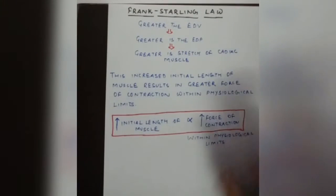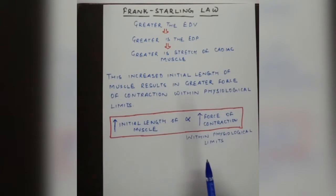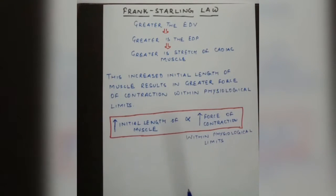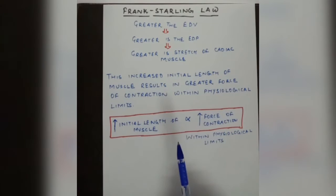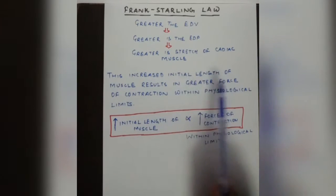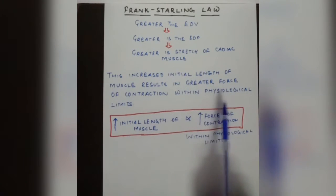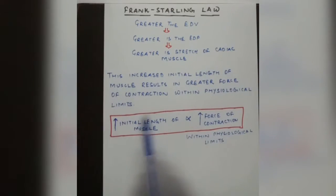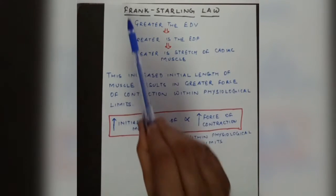After preload and afterload, we come to the next most important law, which is called the Frank-Starling law. What is Frank-Starling law? Greater the end diastolic volume, the greater the initial length of the cardiac muscle. This increased initial length of the muscle increases the force of contraction within physiological limits. This is the definition of Frank-Starling law.